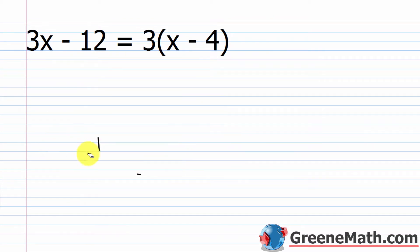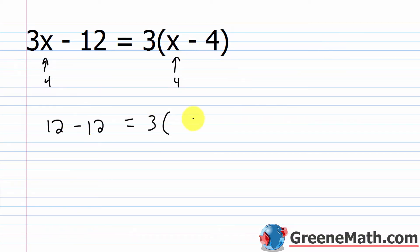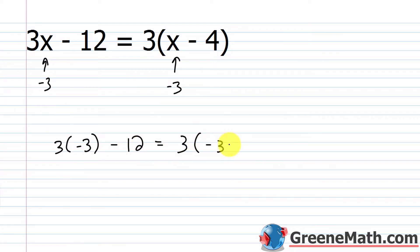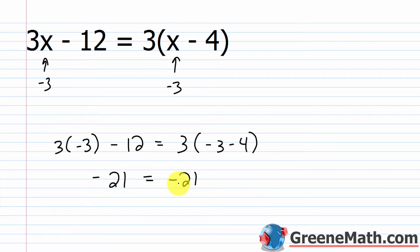Let's try x equals 4. Three times 4 is 12, minus 12, equals 3 times the quantity 4 minus 4, which is 0. So 3 times 0 is 0, and 12 minus 12 is 0. Zero equals zero — true. Let's try negative 3: 3 times negative 3 minus 12 equals 3 times the quantity negative 3 minus 4. Three times negative 3 is negative 9; negative 9 minus 12 is negative 21. Negative 3 minus 4 is negative 7; 3 times negative 7 is negative 21. The left and right side are the same value again.